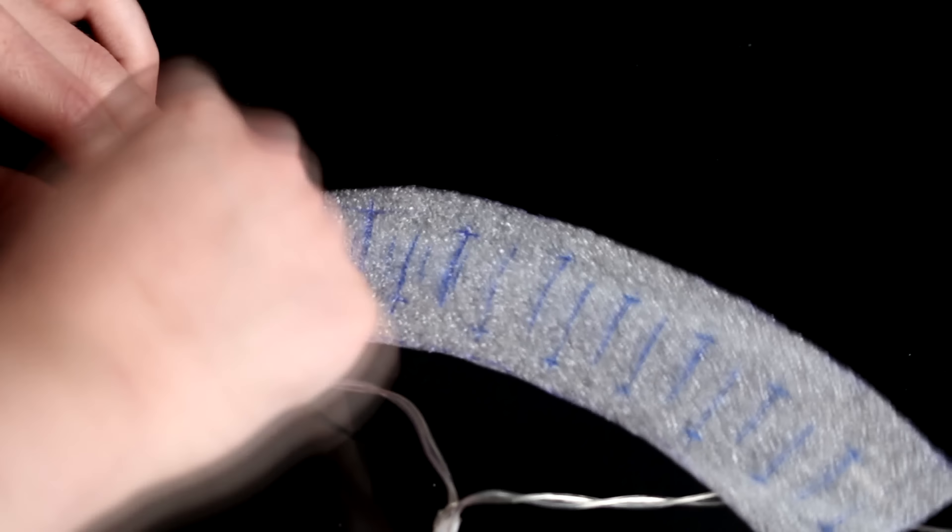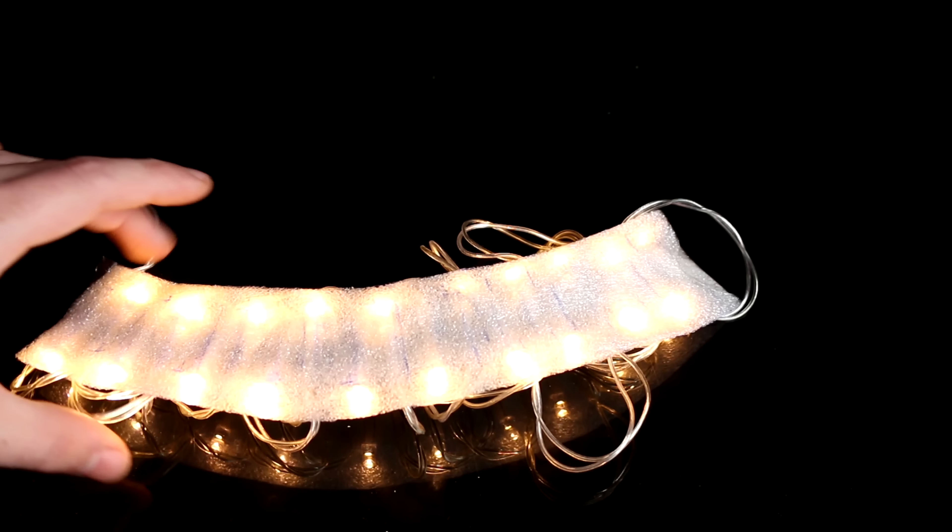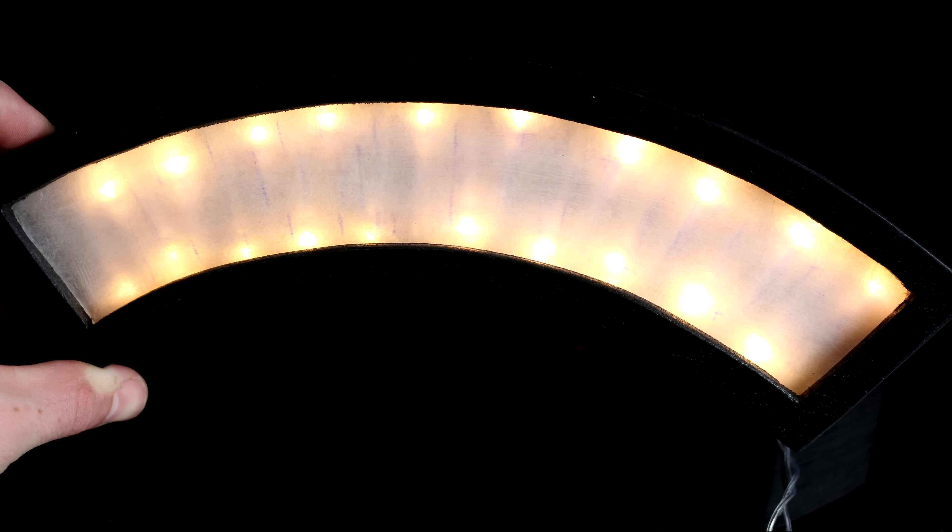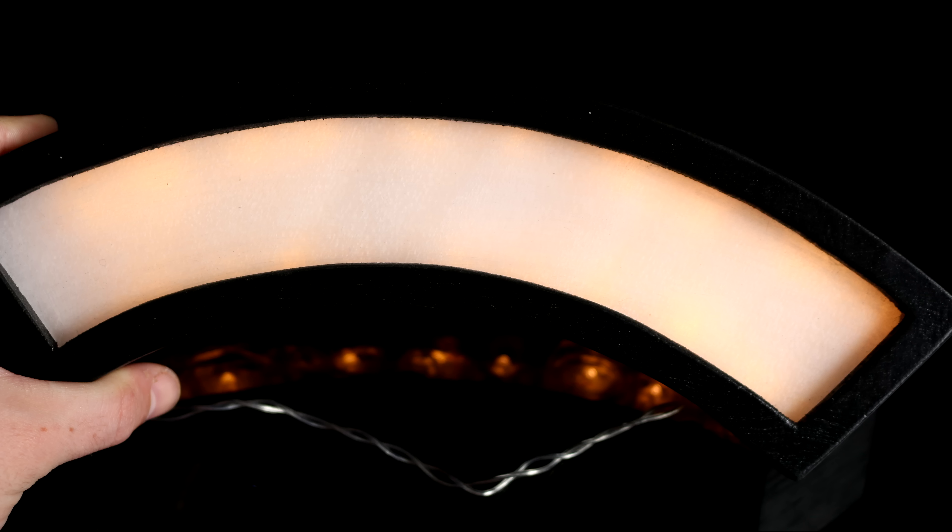I stuck the lights onto one of the shapes with some tape and checked how it looked. This is with one layer, two layers, three layers, and finally four layers. In person, the light definitely looks like one solid panel.